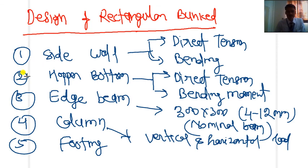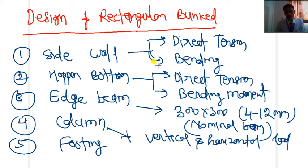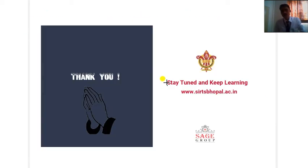By designing individually these five components, we can completely design the storage bin like a bunker. In the next class, we will discuss each component one by one — how to calculate the parameters and reinforcement for the different components. That's all for today. Thank you.